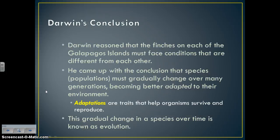Darwin concluded that the finches on each Galapagos island face different conditions and are well-adapted to those conditions. He concluded that a species or population must gradually change over many generations, becoming better adapted to their environment. Adaptations are traits that help an organism survive and reproduce, and that gradual change in a species over time is known as evolution. If the island's food source changed, you would see a corresponding change in the bird species population.